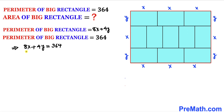We can see all these terms are divisible by 4, so let's divide across the board by 4 to simplify. This equation reduces to 2x + y = 91. Let's call this equation number 1.